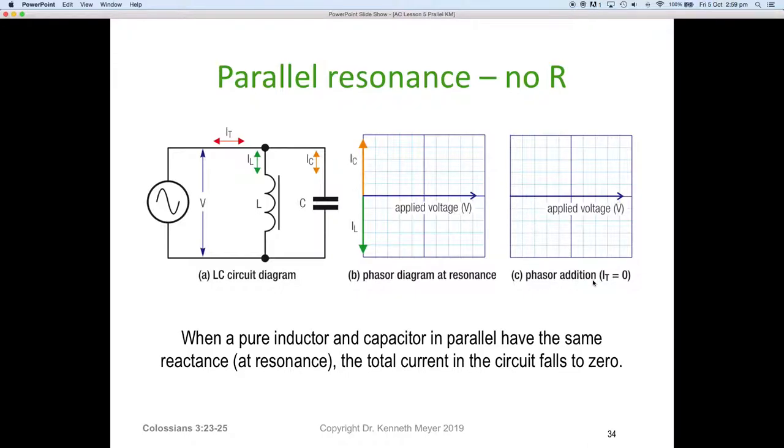The phasor addition of IT equals zero. There is no current. So when a pure inductor and a pure capacitor are in parallel and have the same reactance, that is they are at resonance, the total current in the circuit falls to zero. It makes it look as though the capacitor and the inductor are not there. In other words, they have gone high impedance. Their resistance is so high that it draws no current.